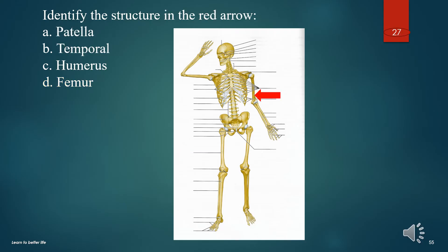Identify the structure at the red arrow. A. Patella. B. Temporal. C. Humerus. D. Femur. The answer is C. Humerus.